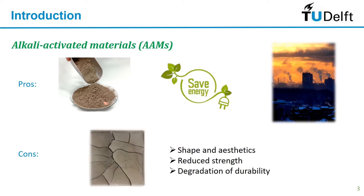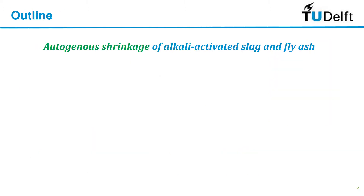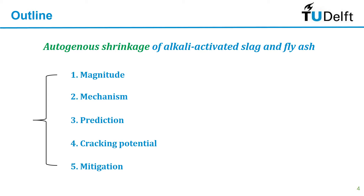But these materials also have disadvantages — for example, the fast setting and also the large shrinkage. When the shrinkage is large it has several consequences: in the point of view of shape and also cracking can develop, which induces bad effects on not only strength but also durability. So my topic is on autogenous shrinkage of alkali-activated slag and fly ash.